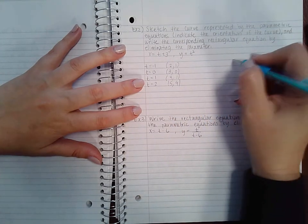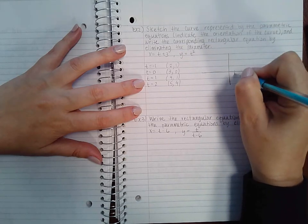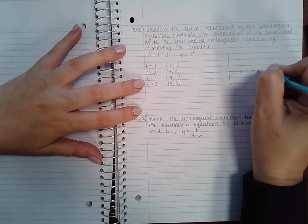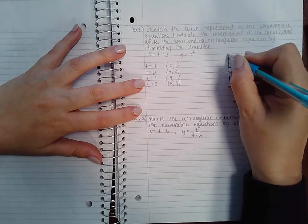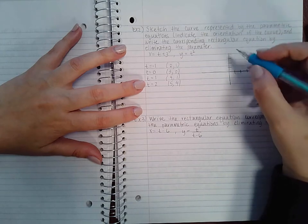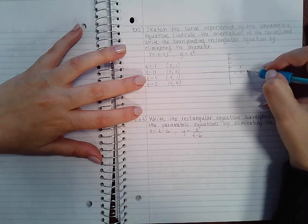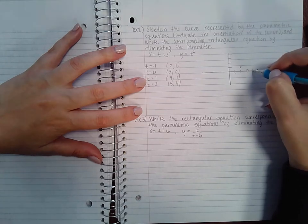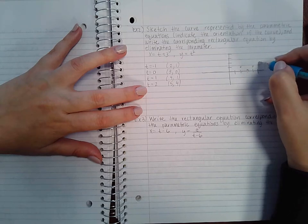So if I graph this, 1, 2, 3, 4, 5 and 1, 2, 3, 4. Let's see, we start off at 2 and 1, then 3 and 0, then 4 and 1, and then 5 and 4.